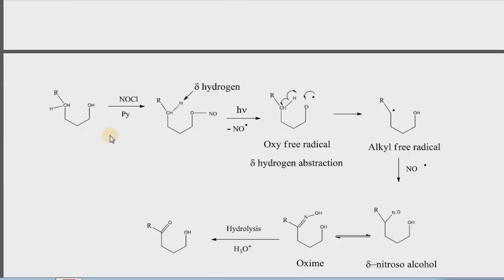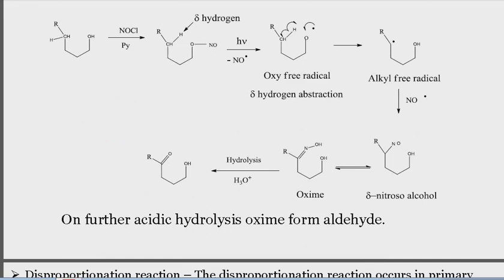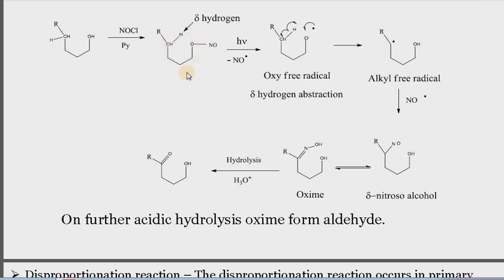The nitroso compound tautomerizes to the corresponding oxime. So first of all, an alcohol is converted into an alkyl nitrite by treating it with nitrosyl chloride in pyridine solvent. After the formation of this alkyl nitrite, the further photochemical process will start.